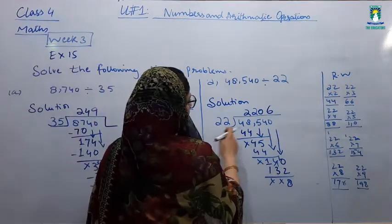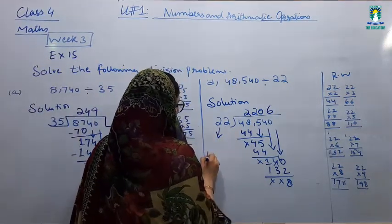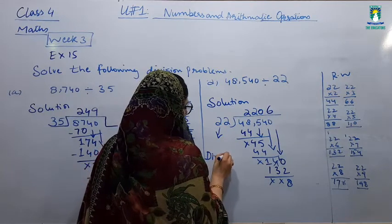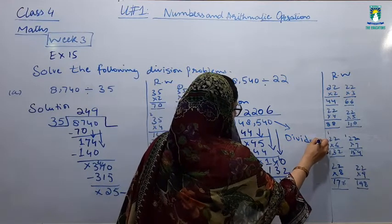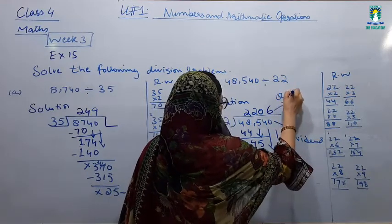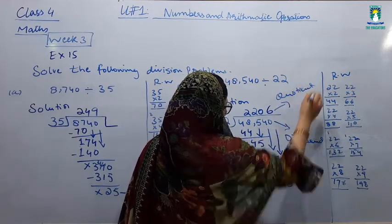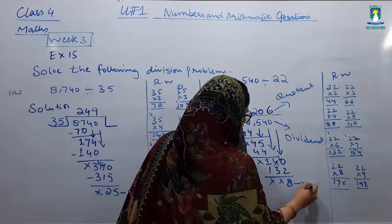This is our divisor. This is our dividend. This is our quotient. And this is our remainder.